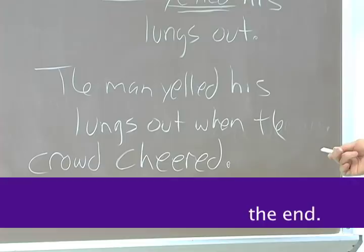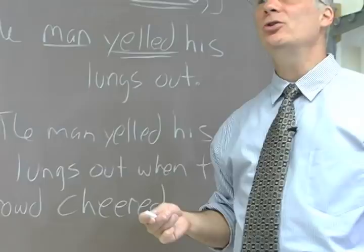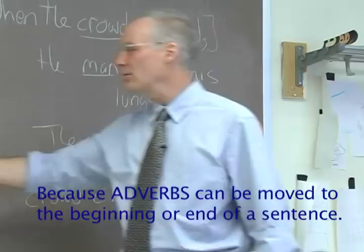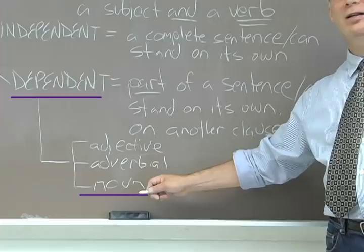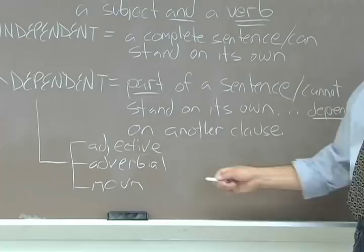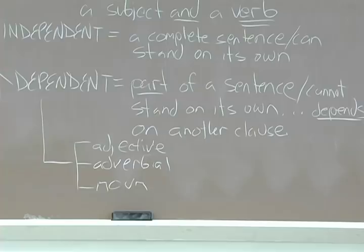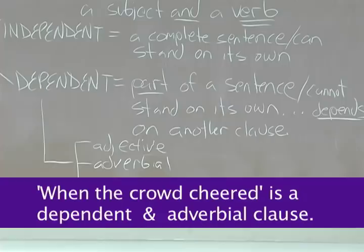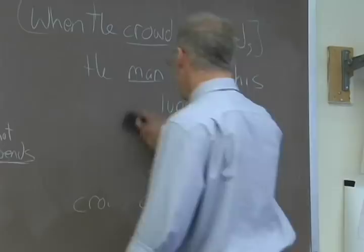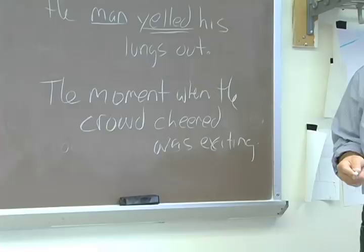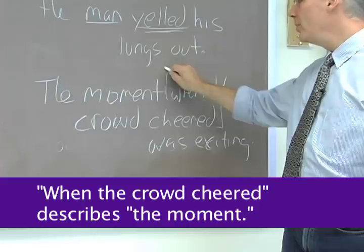The fact that a group of words can move like that tells you it is working as an adverb, which takes us to the last distinction among dependent clauses. A dependent clause can be either an adjective clause, an adverbial clause, or a noun clause. These are parts of sentences, not whole sentences. When the crowd cheered is a dependent clause that is also an adverbial clause — you can tell because it can move. But in 'the moment when the crowd cheered was exciting,' when the crowd cheered is describing 'the moment,' so in that sentence it would be an adjective clause.